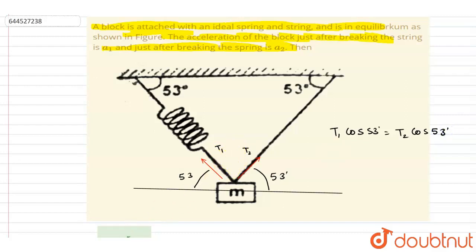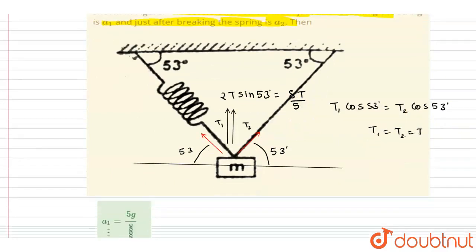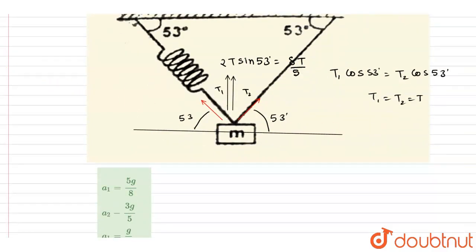Looking at the component in the upward direction, it will be sin53°. Now we have T1 equals T2, so I can write T1 equals T2 equals T. It will be 2T sin53°, and since sin53° is 4/5, that gives 8T/5 in the upward direction. Since the net force on the block is zero, 8T/5 equals mg.